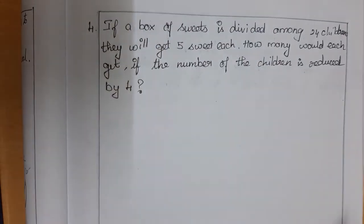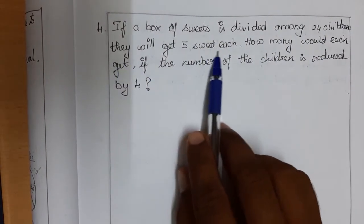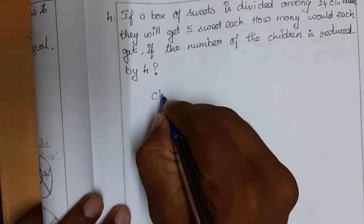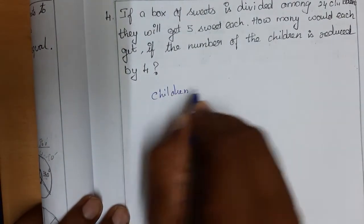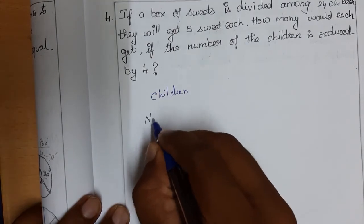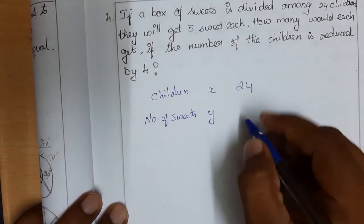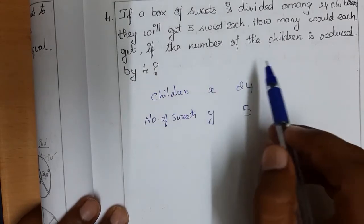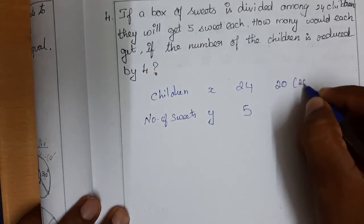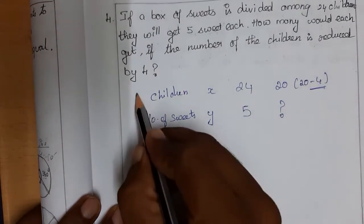Next problem: A box of sweets is divided among 24 children and each gets 5 sweets. How many sweets would each get if the number of children is reduced by 4? If reduced by 4, we have 20 children. We need to find how many sweets each child gets.